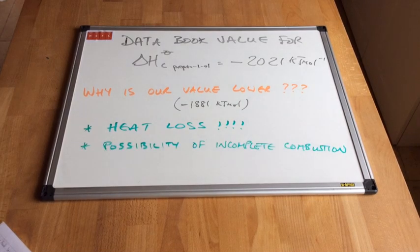Another possible reason could be that we didn't get complete combustion. So there's a chance that we had incomplete combustion taking place. And that has a different chemical equation associated with it. And so therefore it could explain why our value is different to the data value.